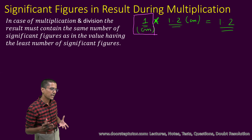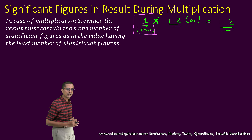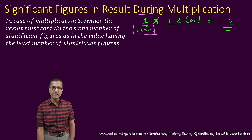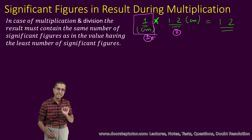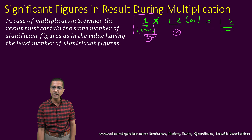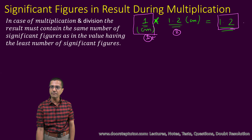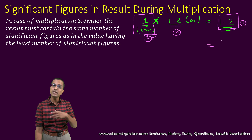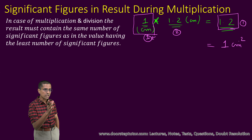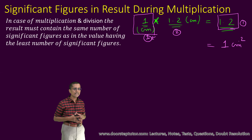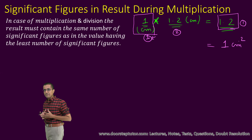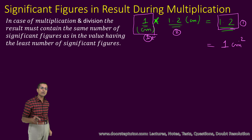In case of multiplication, I find the operand with the least number of significant figures. I have two operands here: 1.2 has two significant figures, and 1 has just one. So because the operand with the least number of significant figures has only one, my final answer would have only one significant figure. I do the rounding operation and my answer comes out to be 1 centimeter squared. When doing multiplication and division, the result takes on the same number of significant figures as the operand with the least number of significant figures.